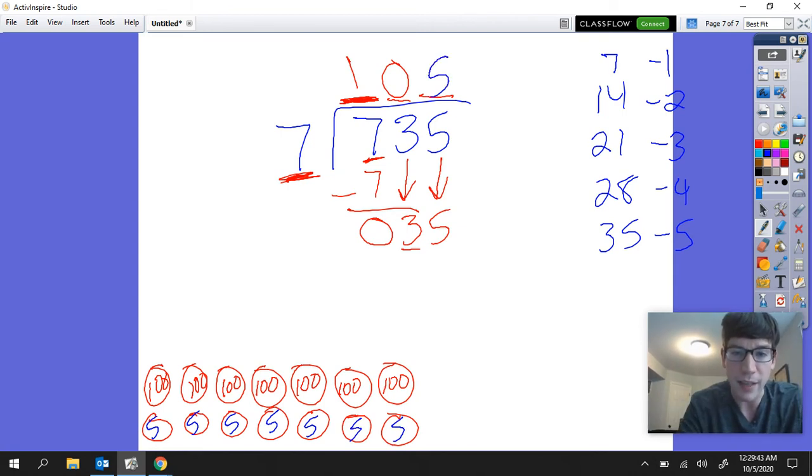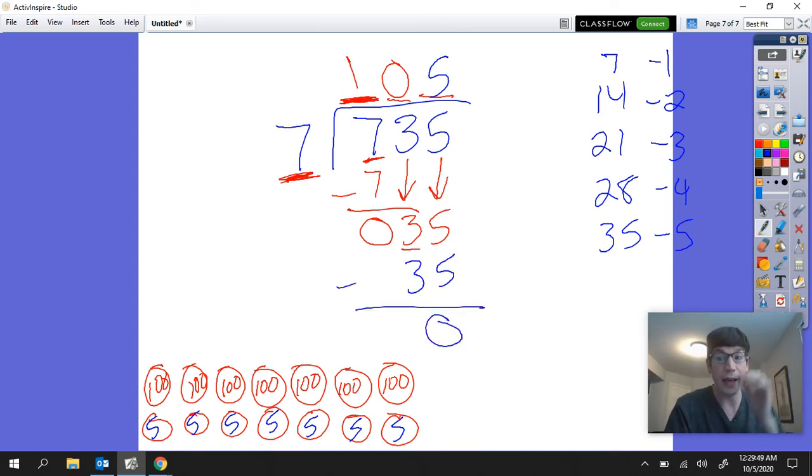And if I do that seven times five is 35 and I will end up with nothing remaining. Now we always hope we can get it to divide up evenly but sometimes if it doesn't divide up evenly we just end up with a remainder. That just means we have something left over and we don't have enough to give some to every single group.